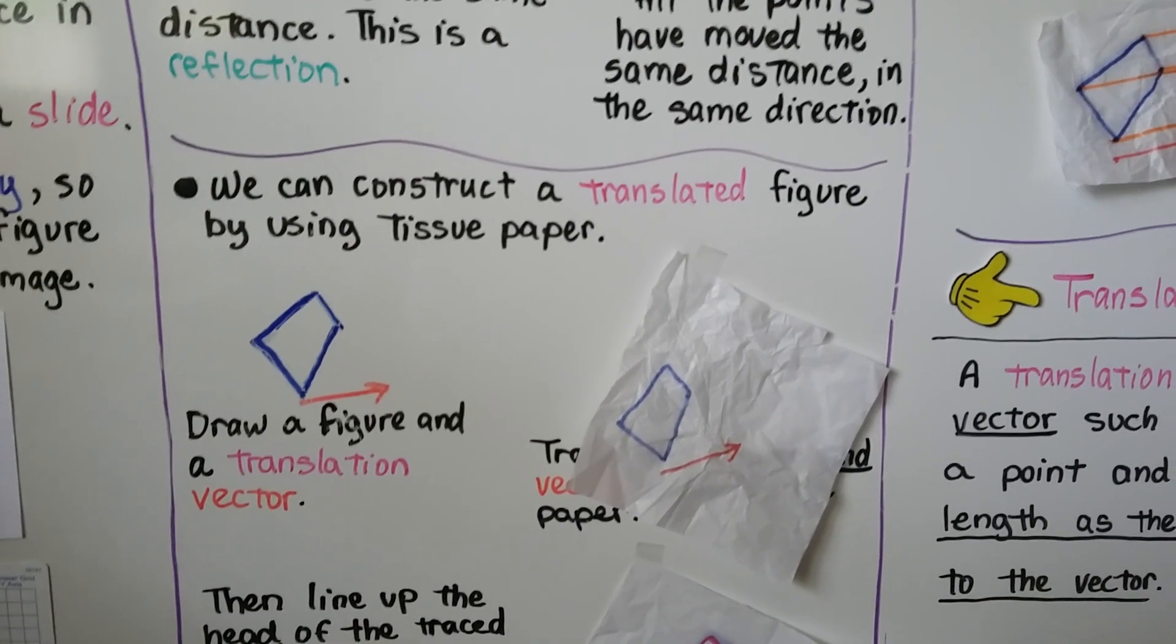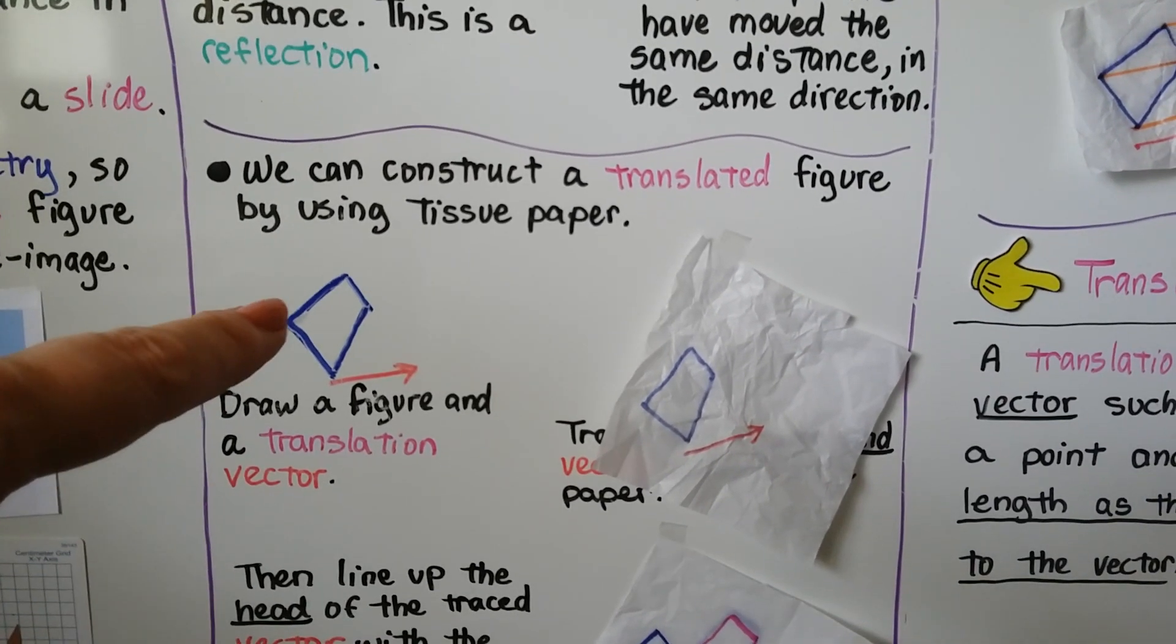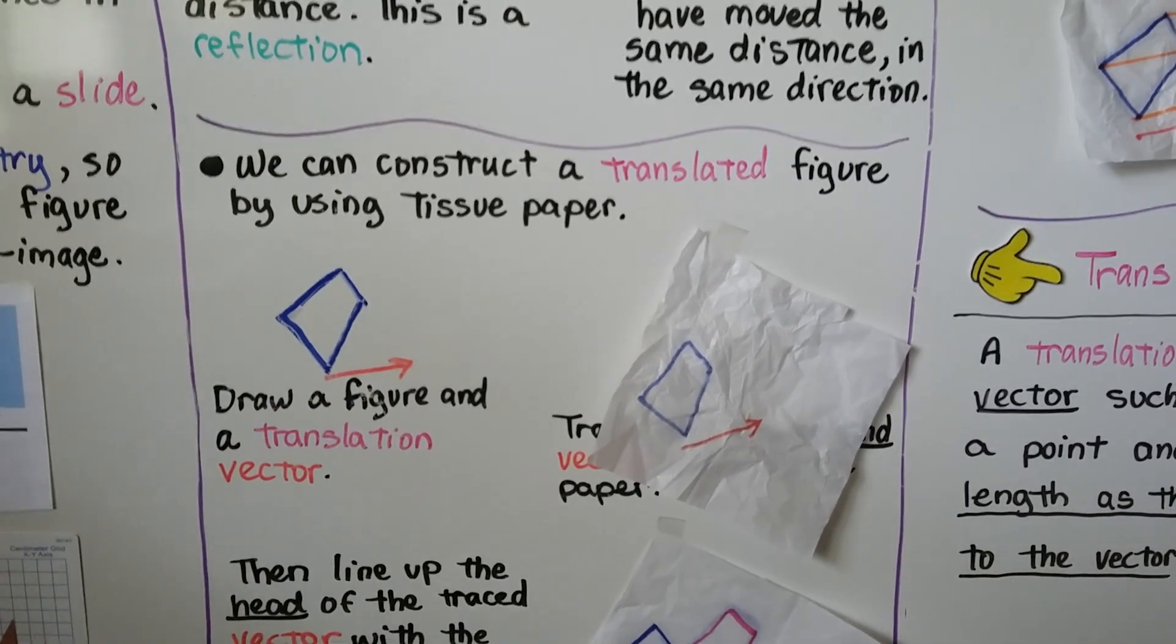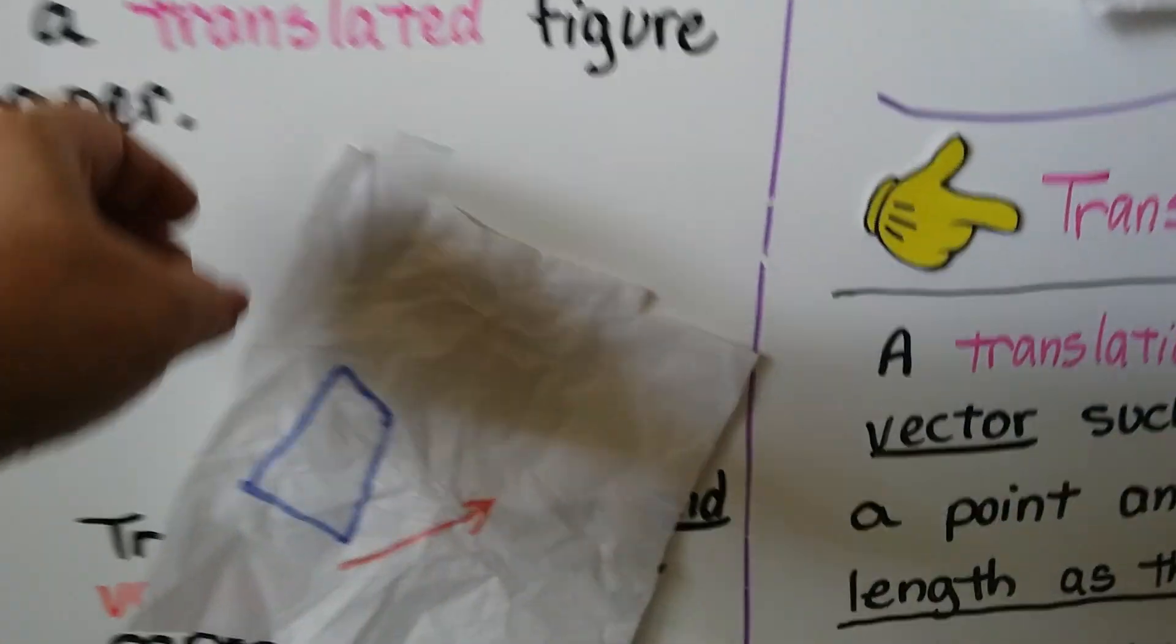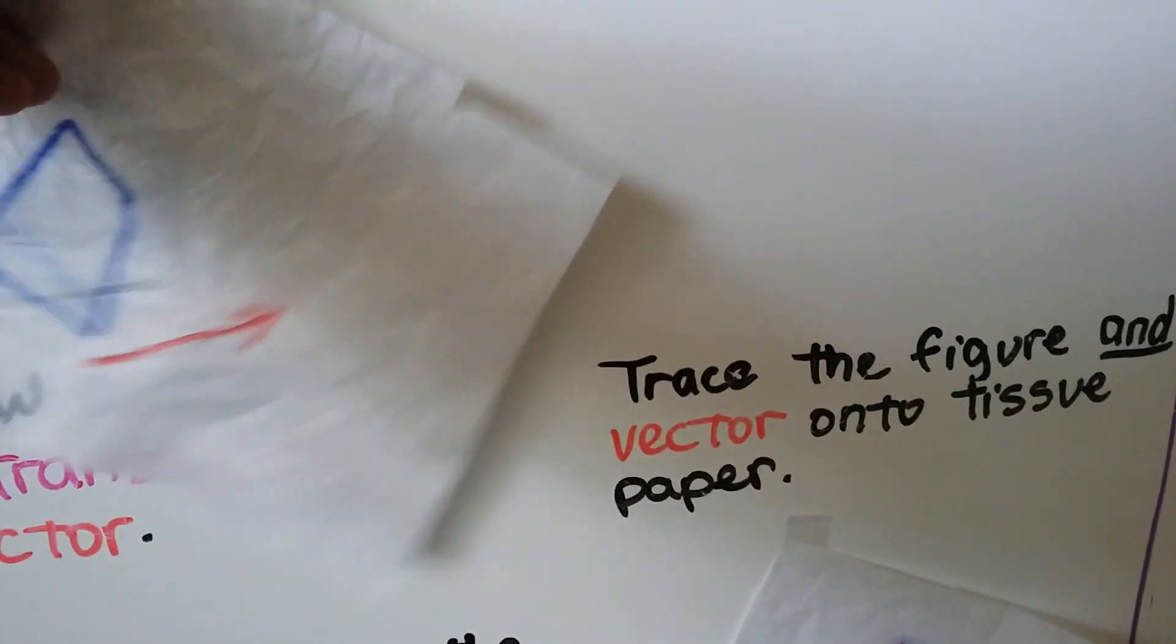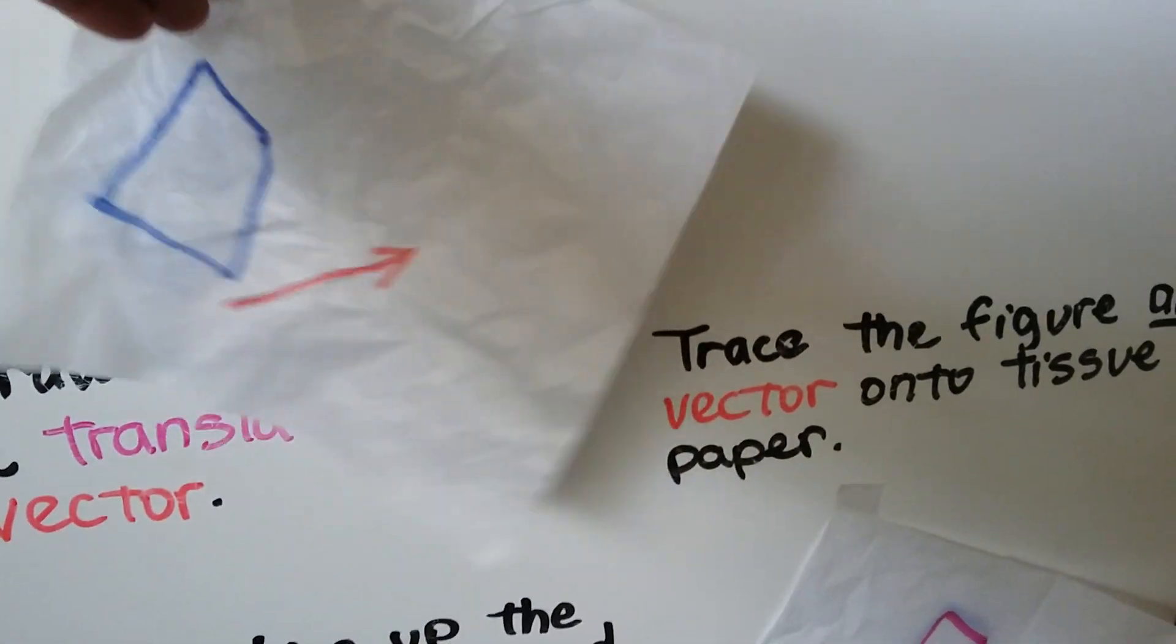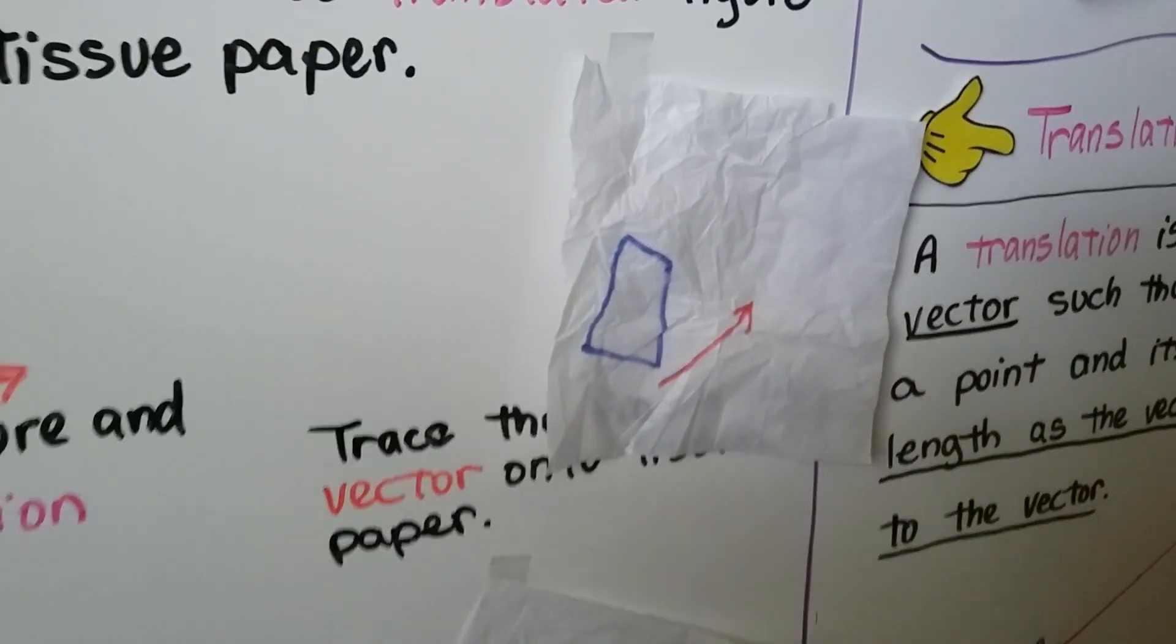We can construct a translated figure by using tissue paper. The first thing we do is draw a figure and a translation vector. That's what that red arrow is. Then we take a piece of tissue paper and we place it over our drawing and we trace it. We trace the vector so it's exactly the same. We trace the figure and the vector onto the tissue paper.